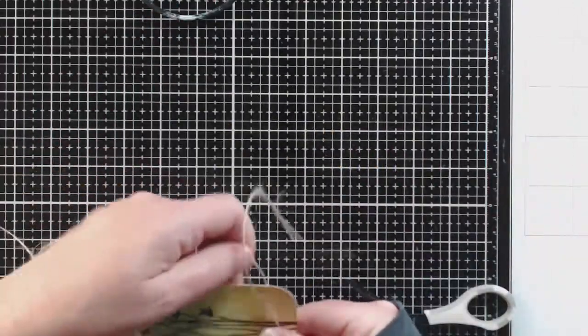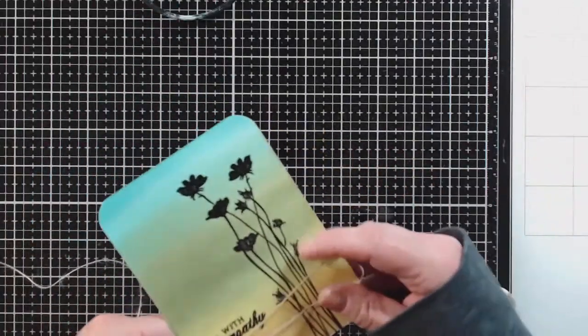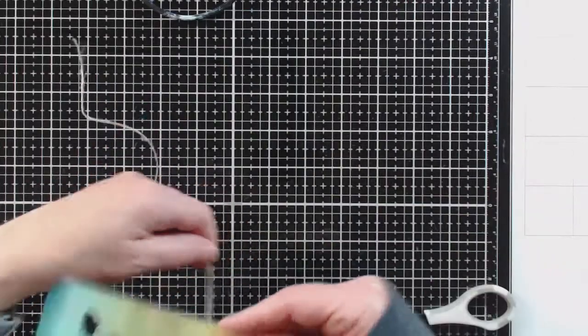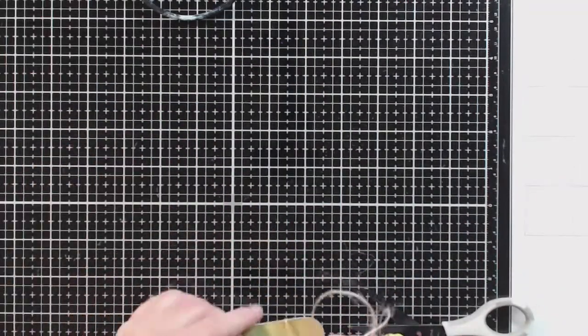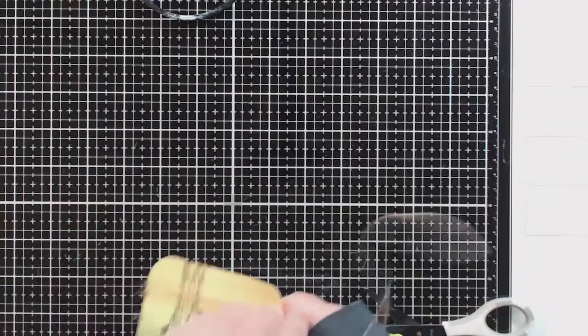I'm going to wrap it around the card so that it goes around three times and then I'm going to tie it in a knot and then I'm going to wrap those ends around the three strands going around the card again and tie another knot so that I can fan them out.